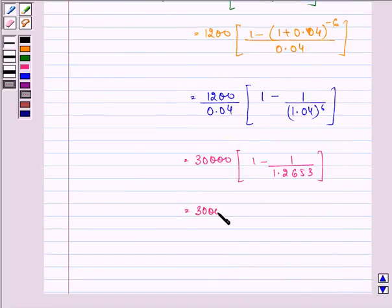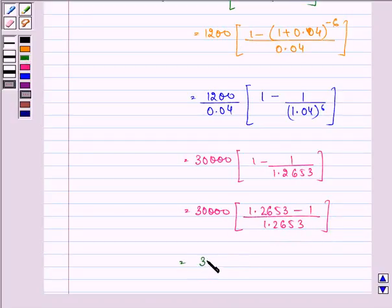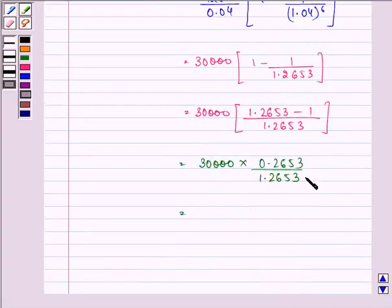So, we have 30,000 into (1.2653 minus 1) upon 1.2653, which is equal to 30,000 into 0.2653 upon 1.2653. And on calculating, simplifying this expression, we have the answer as rupees 6,290 approximately.